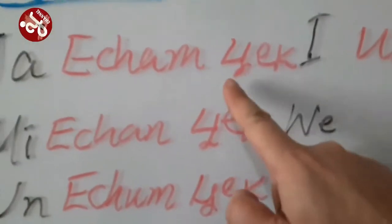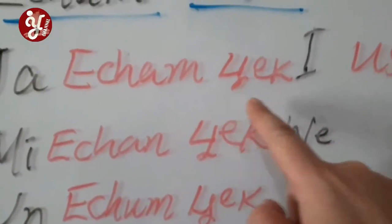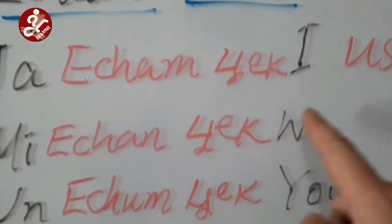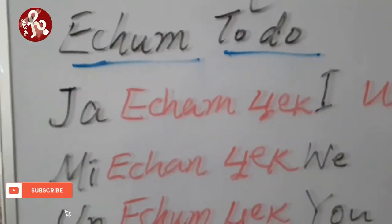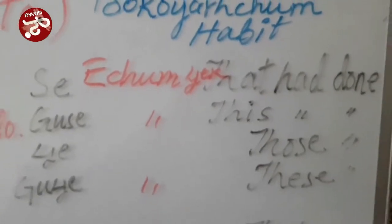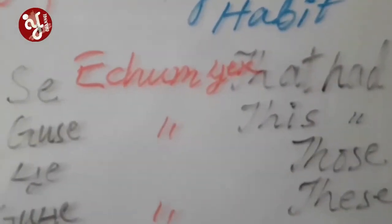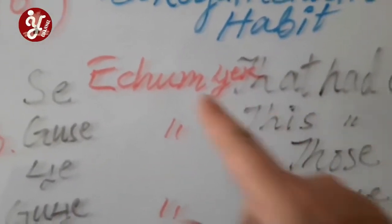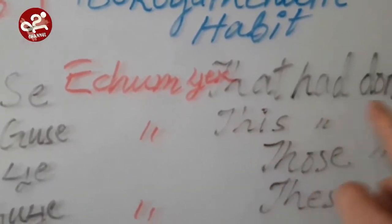This pronoun form is 'say check' — note that this is 'say,' not 'y.' This was about the human pronouns. Now we will talk about non-living beings and animals. 'Se acham check' means 'that used to do.'